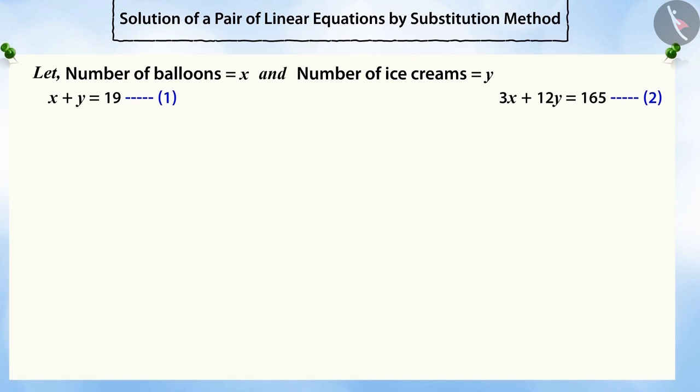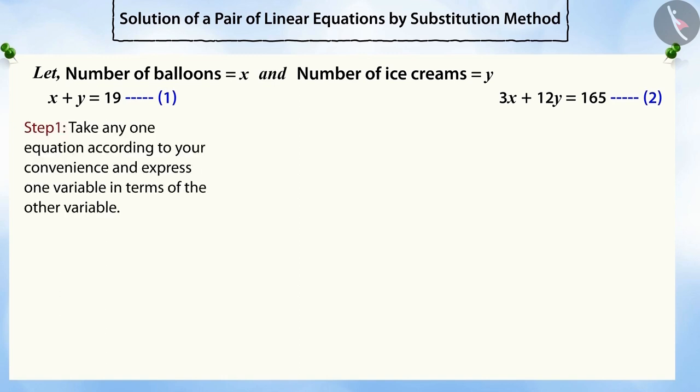We can divide the substitution method into three parts. In the first part, we choose one equation as per our convenience and express one variable in terms of the other. Like here, we take equation 1 and write variable y in terms of variable x. We can call it equation 3.